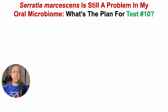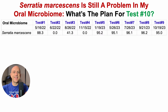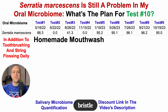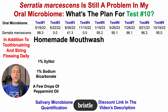So what's the plan for test number ten? Let's take a step back and look at all nine tests to see if there's some pattern. Note that these data are generated by Bristle — there'll be a discount link in the video's description. For the first five tests, in addition to toothbrushing and string flossing daily, I used a homemade mouthwash which included 1% xylitol, 1% sodium bicarbonate, and a few drops of peppermint oil in one liter of water.